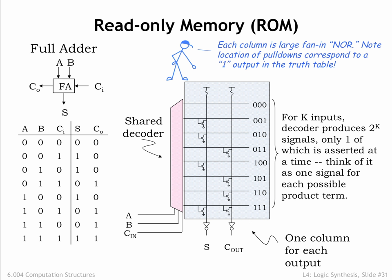So when the inputs are 0, 0, 0, the top decoder output will be high and all the other decoder outputs low. When the inputs are 0, 0, 1, in other words when a and b are 0 and ci is 1, the second decoder output will be high. And so on.